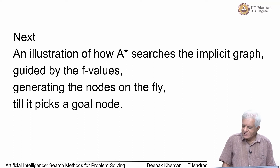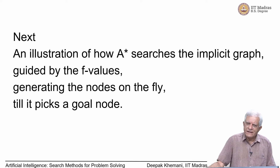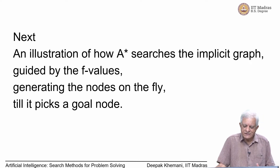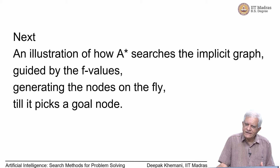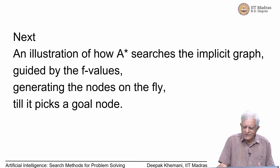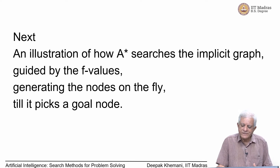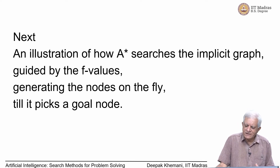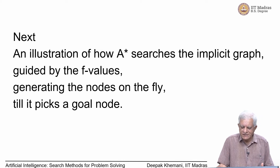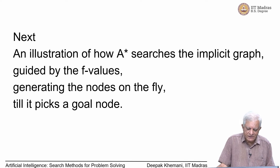We have just looked at A*. Let us see how it works with a small hand-simulated example. The point I would also like to emphasize is that all the algorithms we are looking at — depth first search, breadth first search, best first, hill climbing, A* — they are not working with a graph given to them. The graph is being generated on the fly by the move-gen function, and we will try to highlight that fact as well.